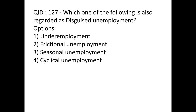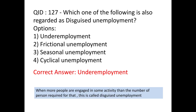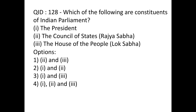Which of the following is also regarded as disguised unemployment? This is a question of economics. There are many types of unemployment: disguised, frictional, seasonal, cyclical, etc. Disguised unemployment is under-employment. If there is any work where more people are engaged than needed, they are called disguised unemployed. Disguised unemployment is also called under-employment — keep this in mind for your exam.